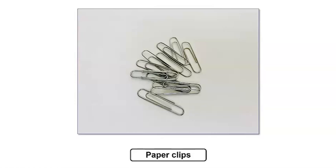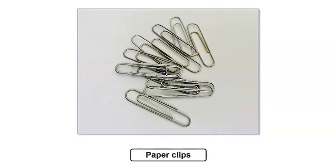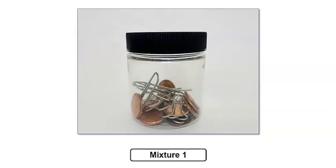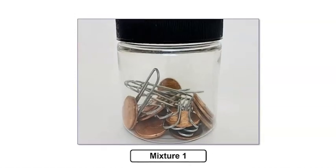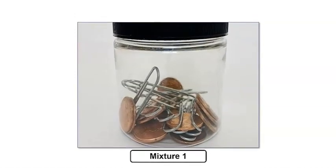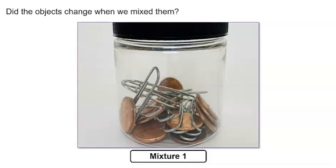What do you notice about the paper clips? The paper clips are silver and small. They feel smooth and they have an oval shape. Now let's mix these objects together in the container. What do you notice? The objects are mixed together, but I can still see individual pennies and paper clips.